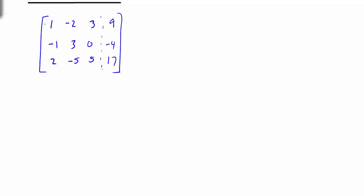The first step is we want to make the first entry a 1. It's already a 1. Now, if this was a 4, we could divide every number in this row by 4 to make the first number a 1. So because this is already a 1, we want to now make everything below this a 0. We can simply add this row to the second row, and that's going to make this a 0. So we bring down 1, negative 2, 3, 9.